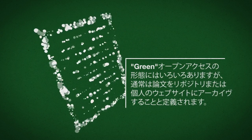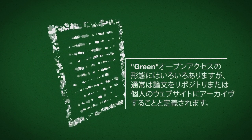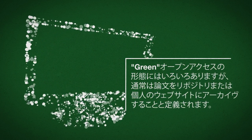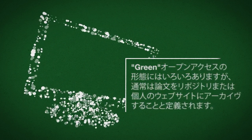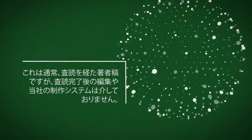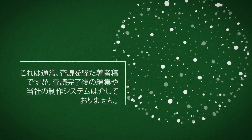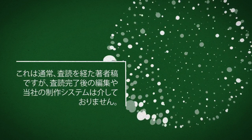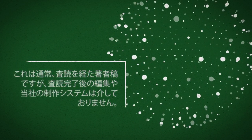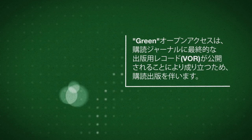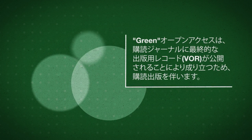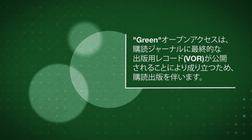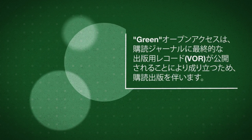There are many different forms of green open access, but it's usually defined as archiving an article in a repository or on a personal website. This is usually the author accepted version which has been through peer review but hasn't been through any post-review editing or our production system. Green open access is symbiotic to subscription publishing as it's supported by publication of the finalized version of record in a subscription journal.